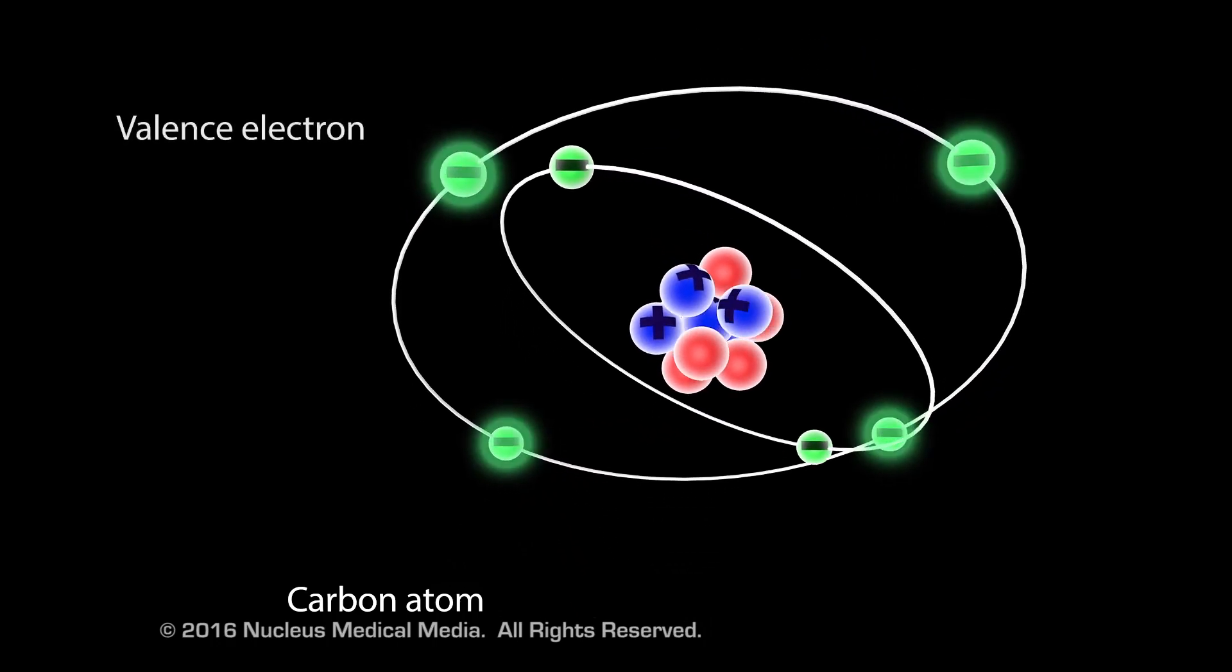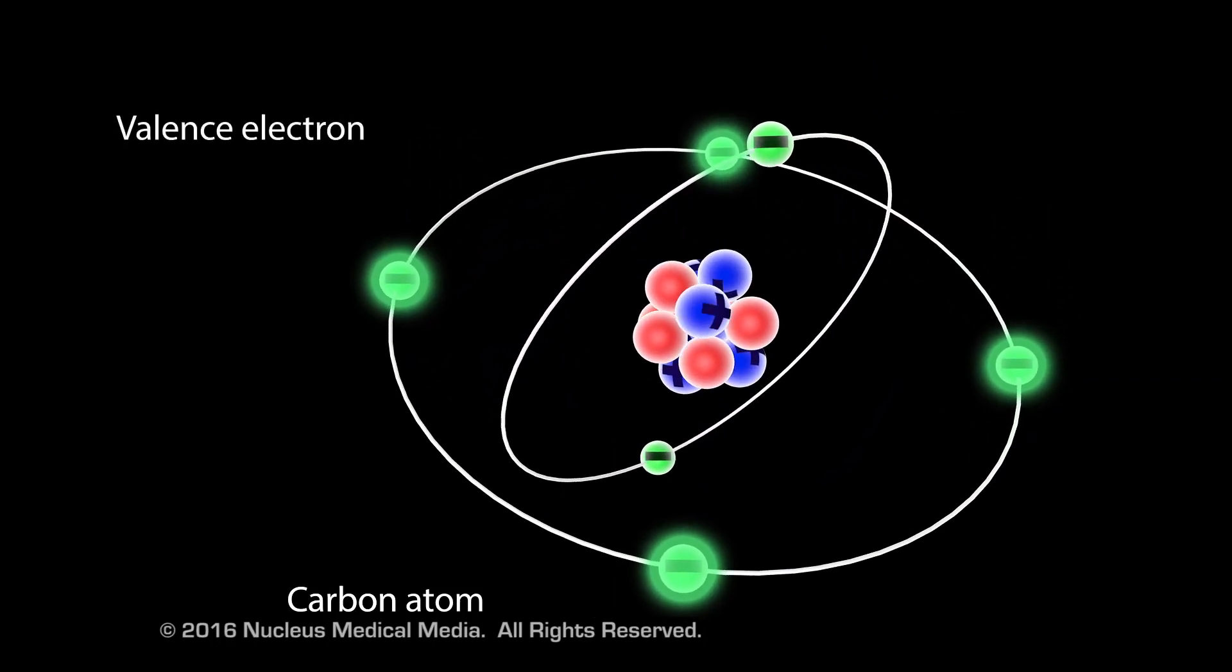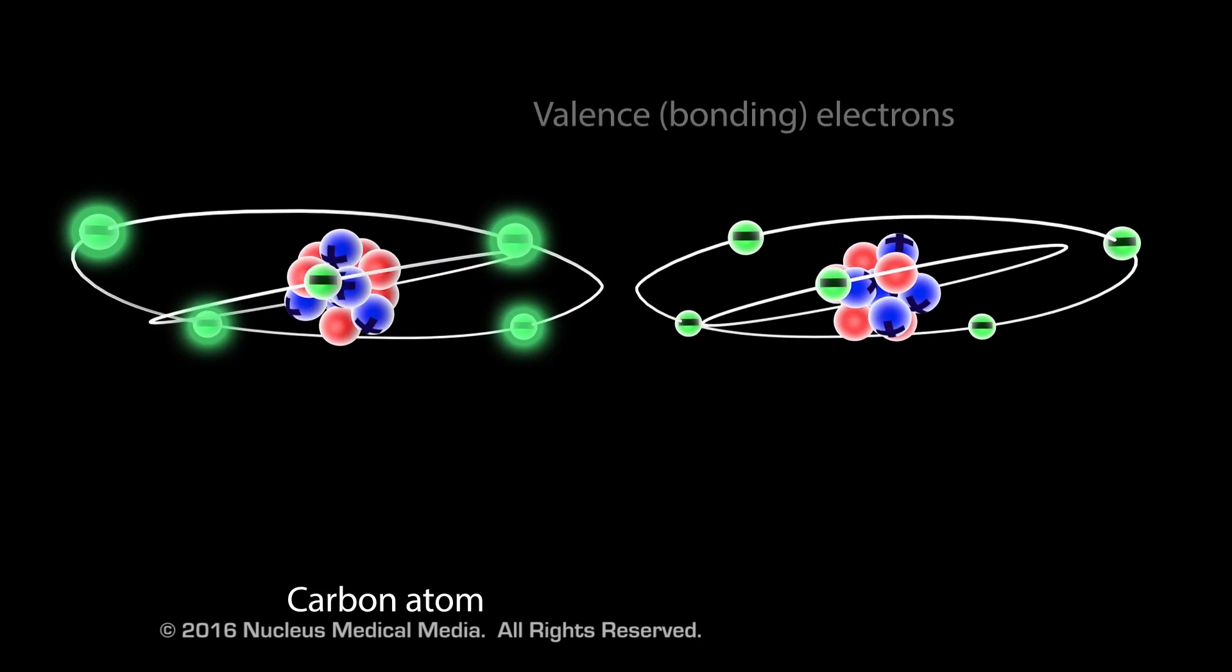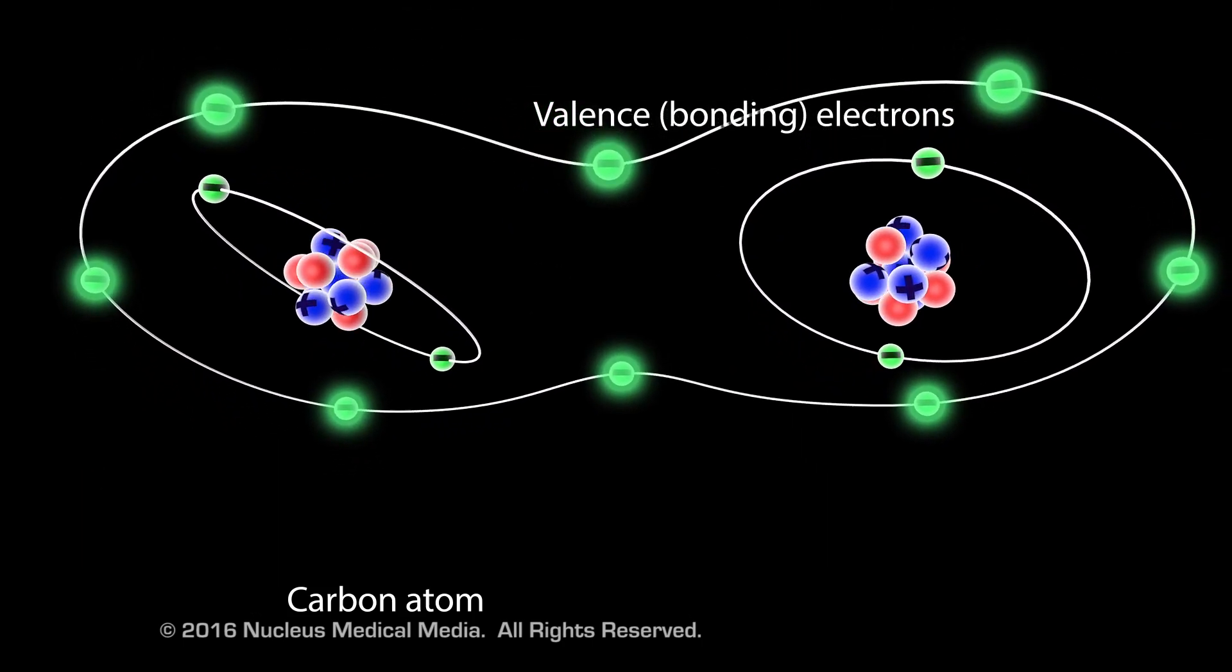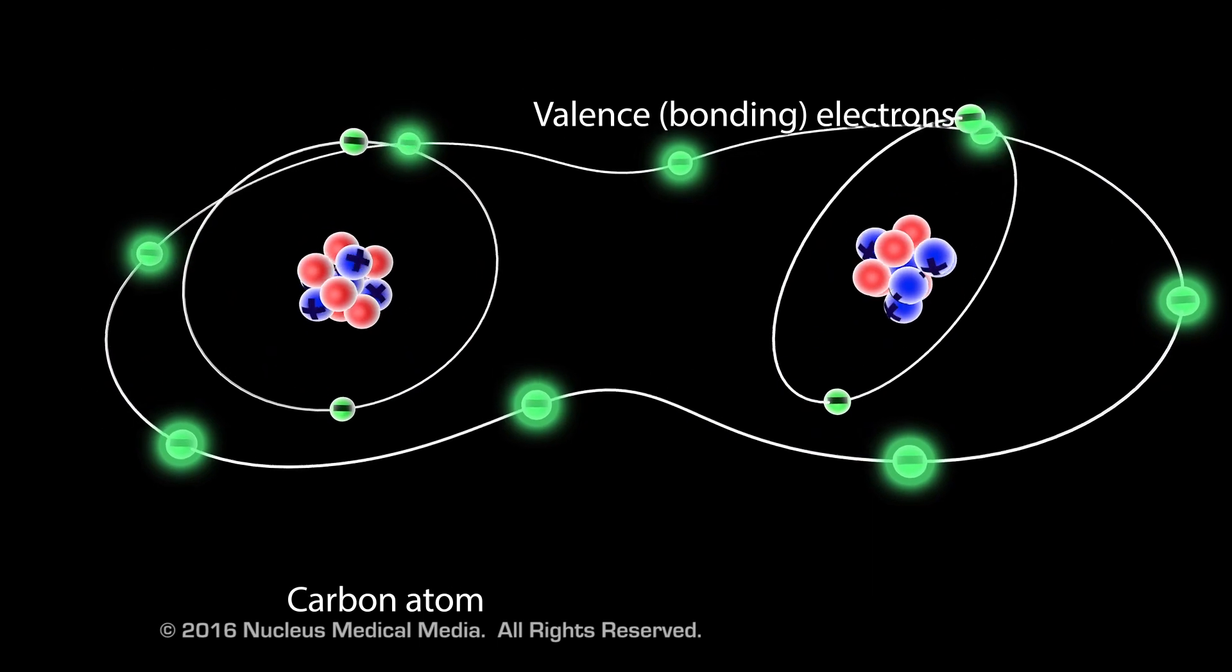Carbon has four valence electrons and is able to bond with other elements that can contribute another four electrons to complete its outer shell.